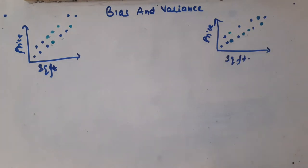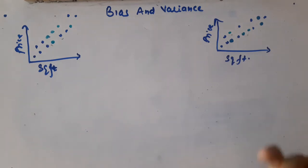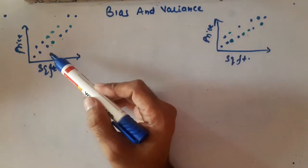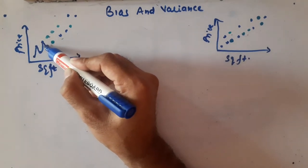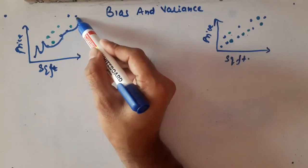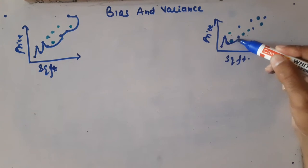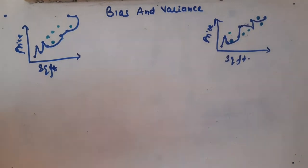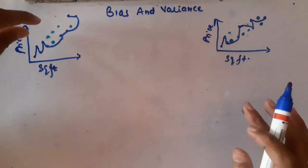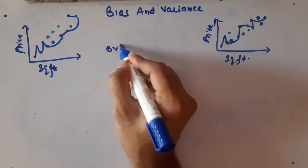What actually happens during the creation of an overfitting model? An overfitting model tries to fit the model line considering each and every training data point. So what will happen is that my model will try to capture or fit the line considering each and every training data point. The same way, the second data scientist has also made the same mistake — the model lines come out fitting every single training point for both.